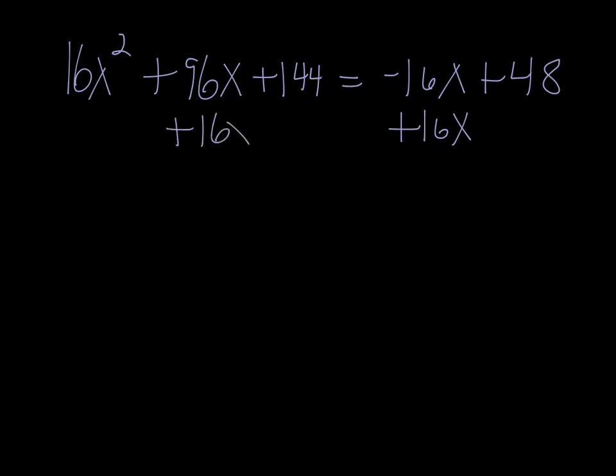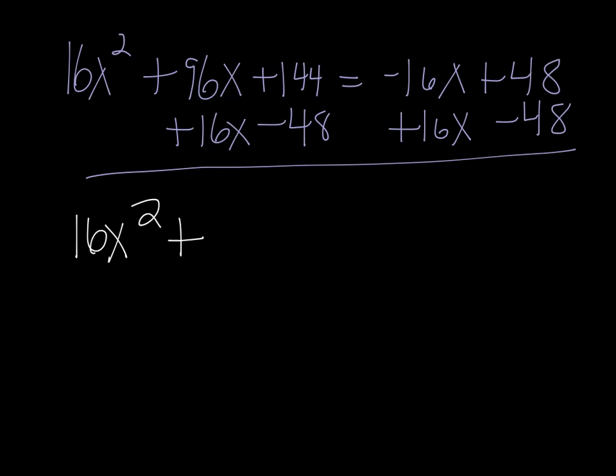So what we have right now is 16x squared plus 96x plus 144 equals negative 16x plus 48. We have a quadratic here, so we want one side to equal zero, so I'm going to add 16x to both sides. And I'm going to subtract 48 from both sides to make that happen.